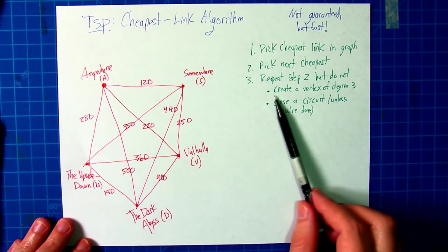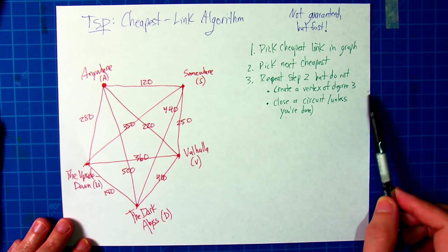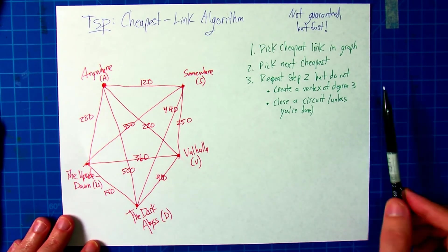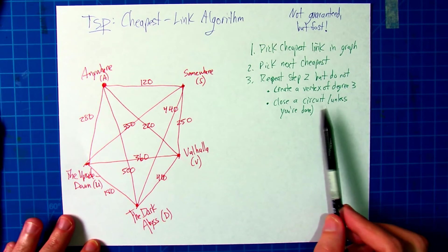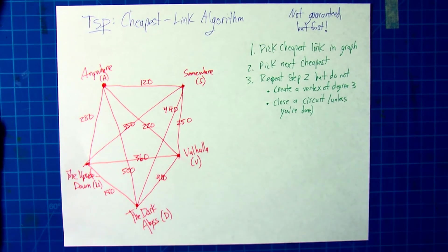You're not allowed to create a vertex of degree three, because that would be going somewhere, leaving, and then somehow coming back to it later, and you're not allowed to close a circuit unless you're done. You have to make sure you hit every location without closing a circuit.